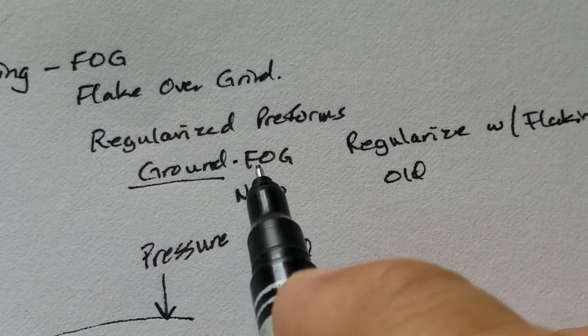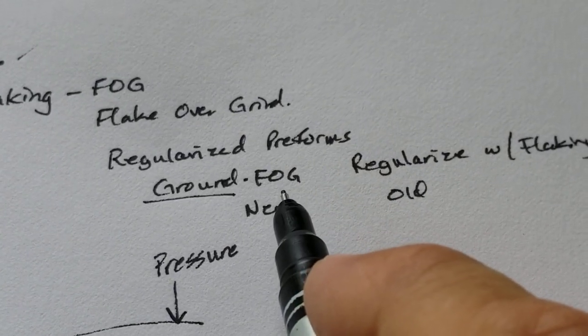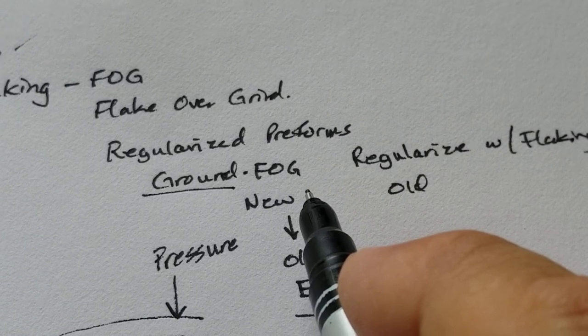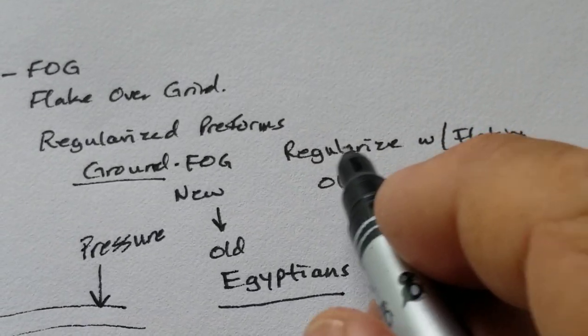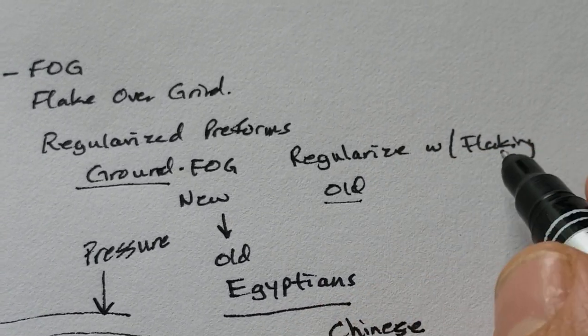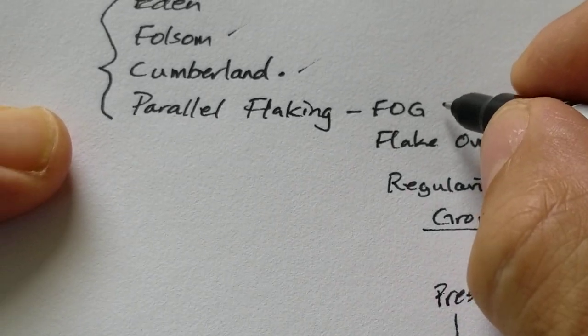But most of the time, this is new. The old way to do it, most of the time, is with regularization—to regularize with flaking. All right, so that's parallel flaking.